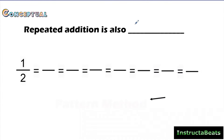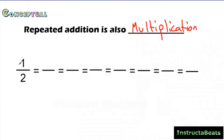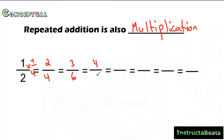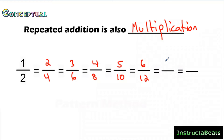What we want to recognize today is that repeated addition is also multiplication. So instead of multiplying, we can actually find equivalent fractions using addition. Let's take a look at this and talk about doing one-half and finding all of these equivalent fractions using multiplication. If I multiply by the big one two over two, my next equivalent fraction would be two-fourths. If I multiply one-half by three over three, my next fraction would be three-sixths. If I multiply by the big one four over four, my next equivalent fraction would be four-eighths. Multiplying by five over five gives five-tenths, six over six gives six-twelfths, seven-sevenths gives seven-fourteenths, and eight over eight gives eight-sixteenths.